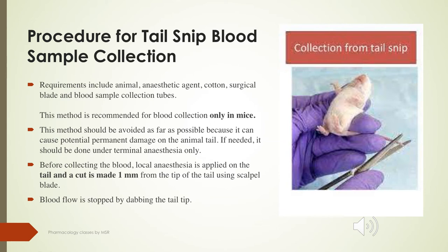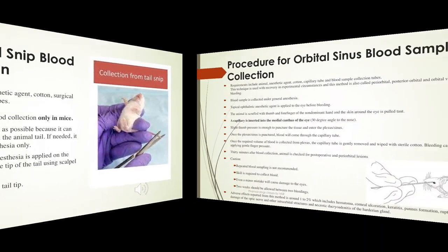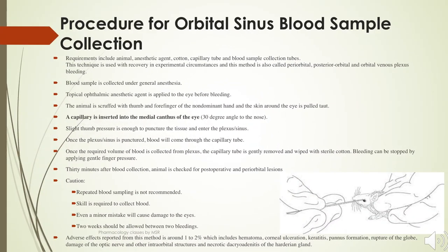The tail snip blood collection method is preferred only for mice. An anesthetic agent is applied, and the tail tip is cut with a scalpel blade by up to 1 mm. Blood is collected, and once the required amount is obtained, blood flow is stopped by dabbing the tail tip.